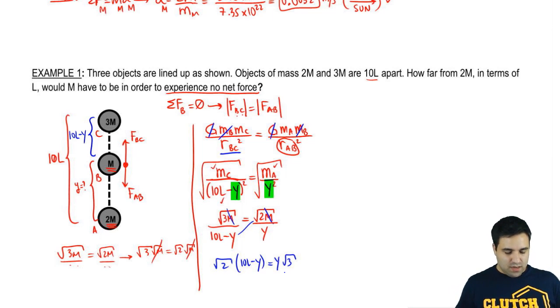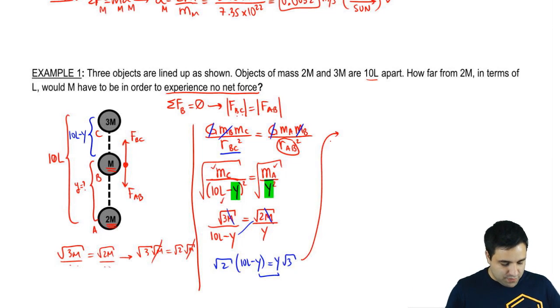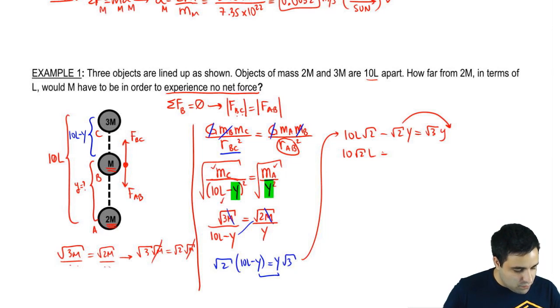So I'm going to have here on the left, this is going to multiply with that. So I'm going to have square root of 2 times (10l minus y) equals y square root of 3. And this is just algebra. It's kind of annoying. But I have to get the y's by themselves so that I can solve for y. Let me continue over here. So I'm going to distribute this. So it's going to be 10l square root of 2 minus square root of 2 y equals square root of 3 y. And I'm going to move this over here. And I'm going to get 10 square root of 2 l equals square root of 2 y plus square root of 3 y.